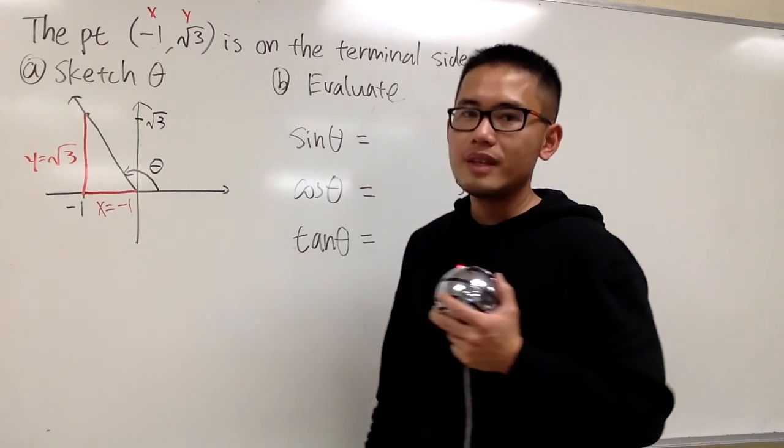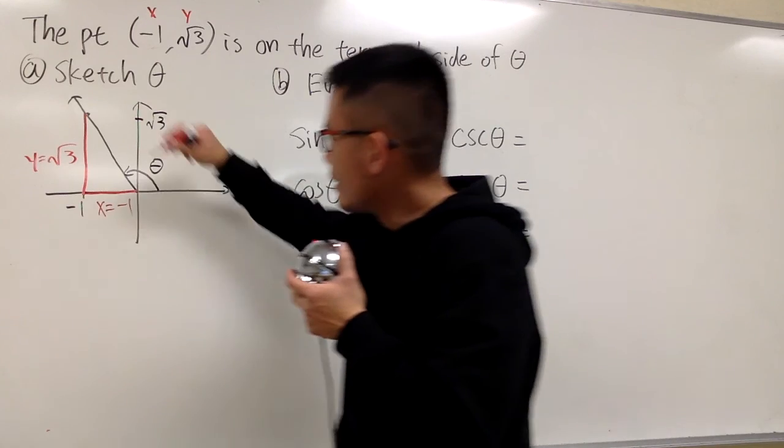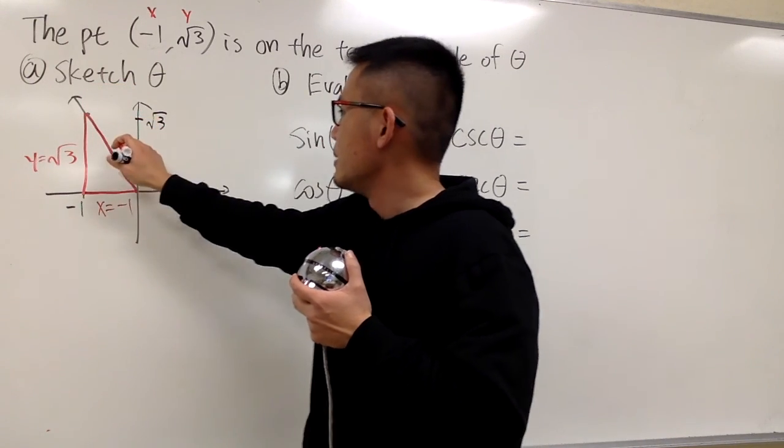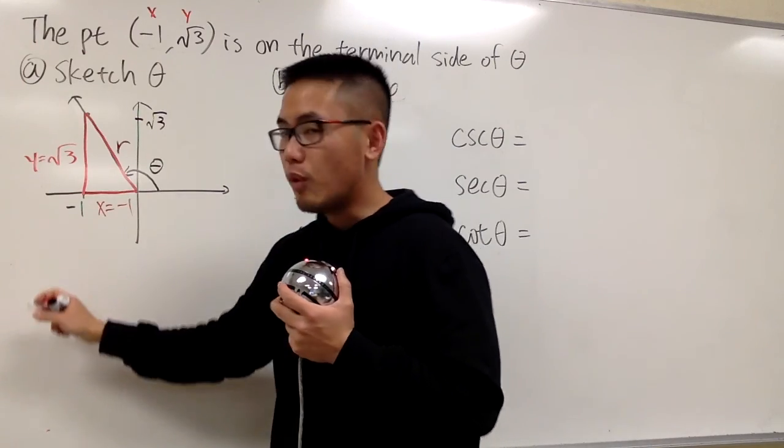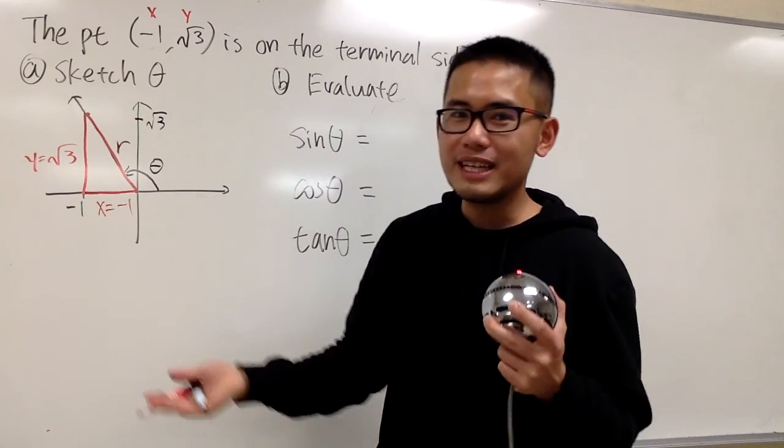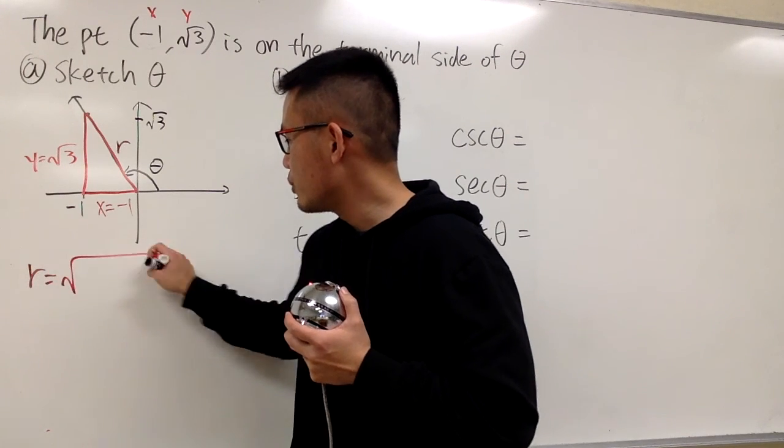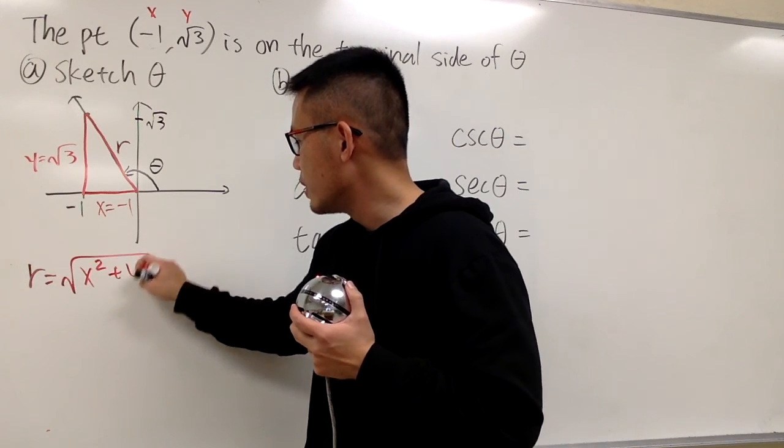And we can also come with r. So r is from here to here. So let me label that as r, and we have the formula. It's pretty much the Pythagorean theorem. Anyways, r equals to square root of x squared plus y squared.